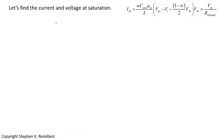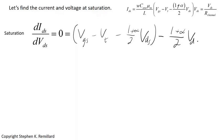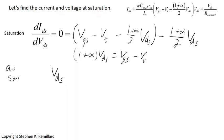Taking dI_DS/dV_DS = 0 from the IV expression: W*C_oxide*mu_nS/L times (V_GS minus V_T minus (1 + alpha)/2 * V_DS) minus (1 + alpha)/2 * V_DS = 0. Solving: (1 + alpha) * V_Dsat = V_GS minus V_T, so V_Dsat = (V_GS minus V_T) / (alpha + 1). That is an important expression.